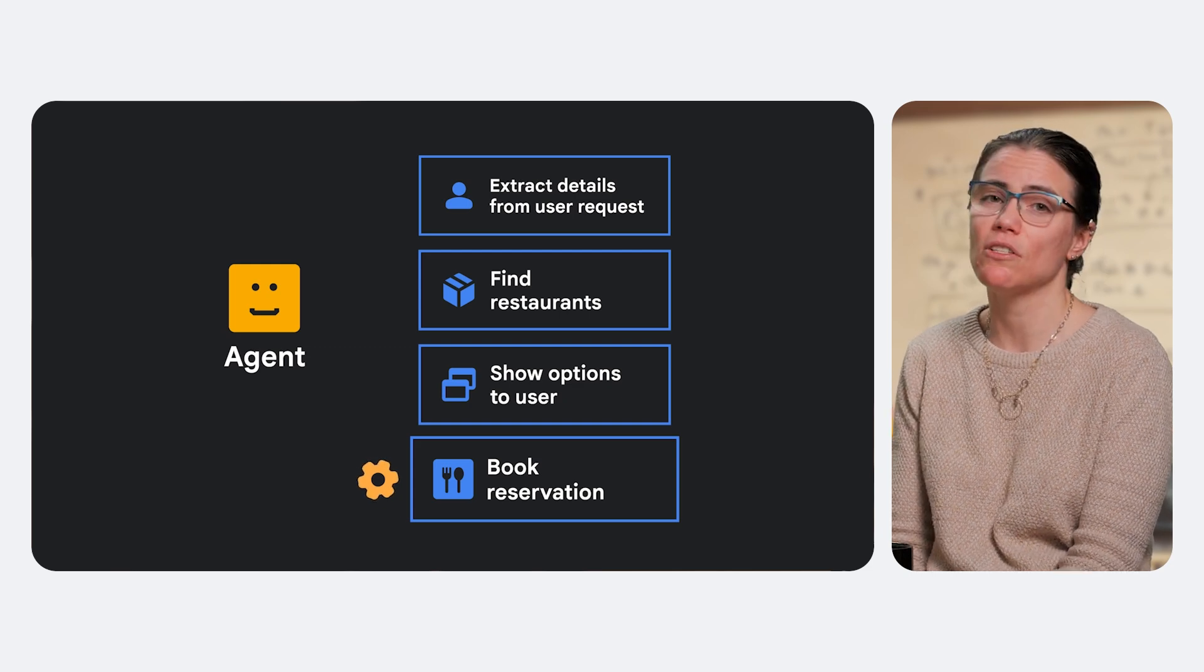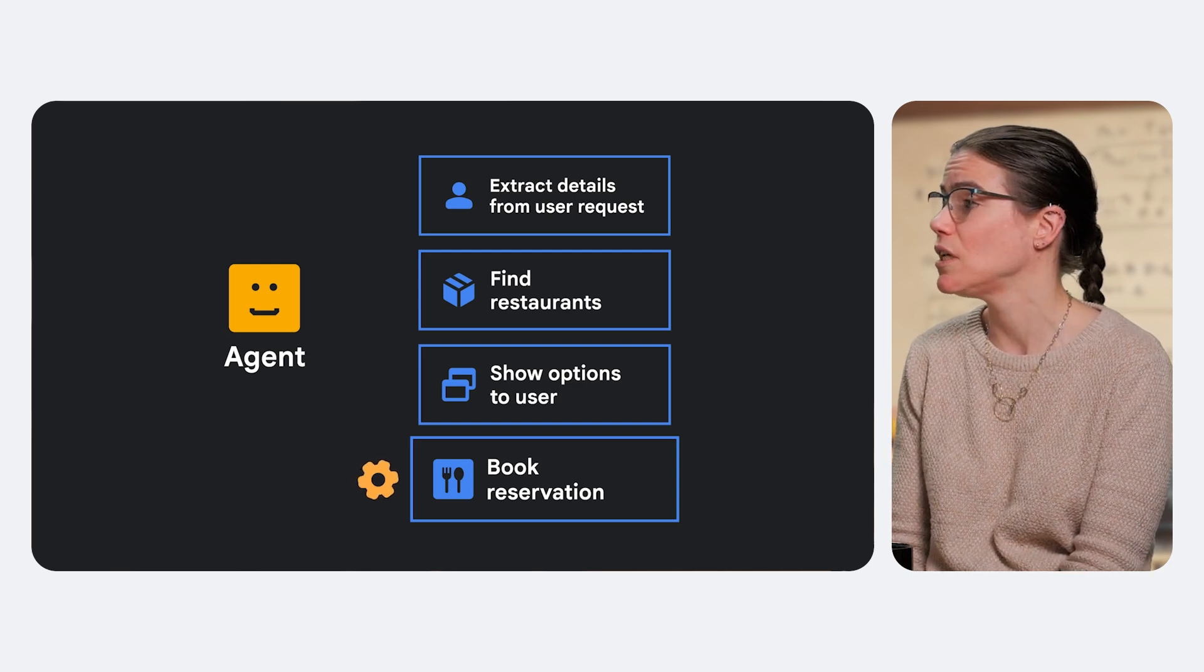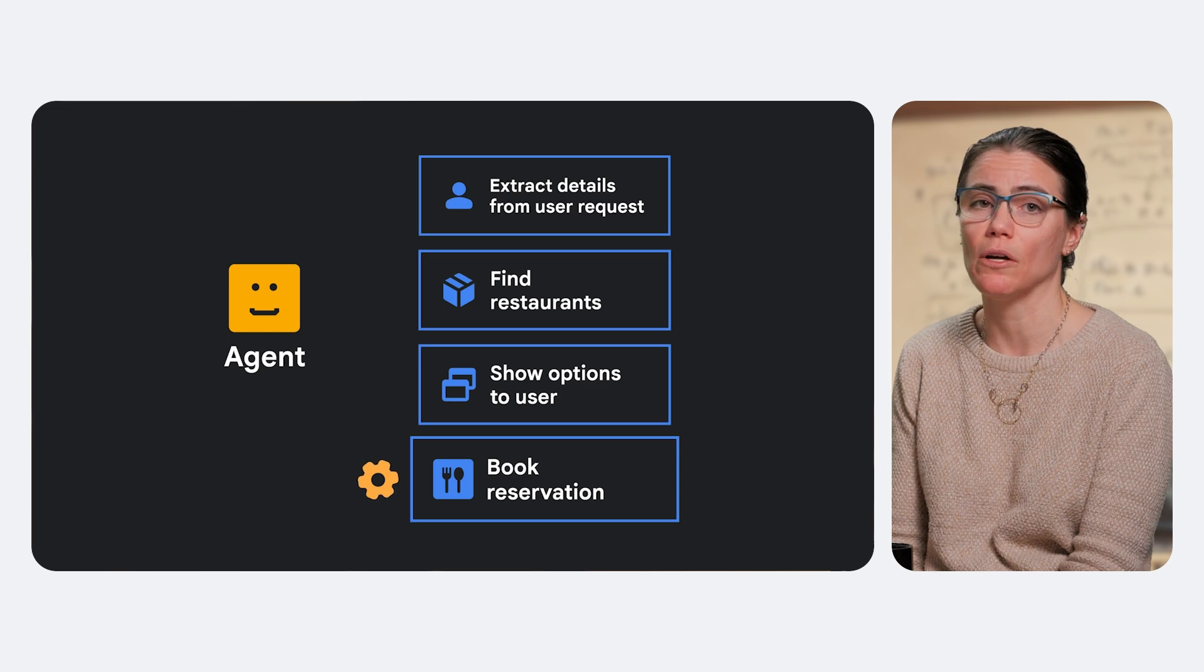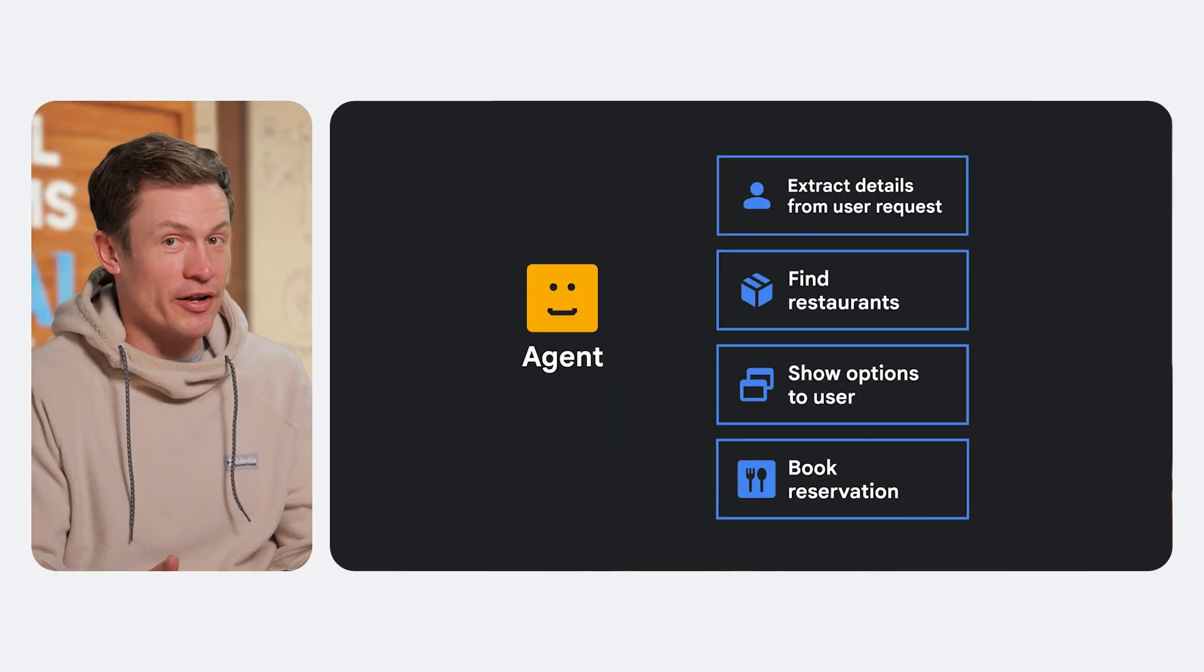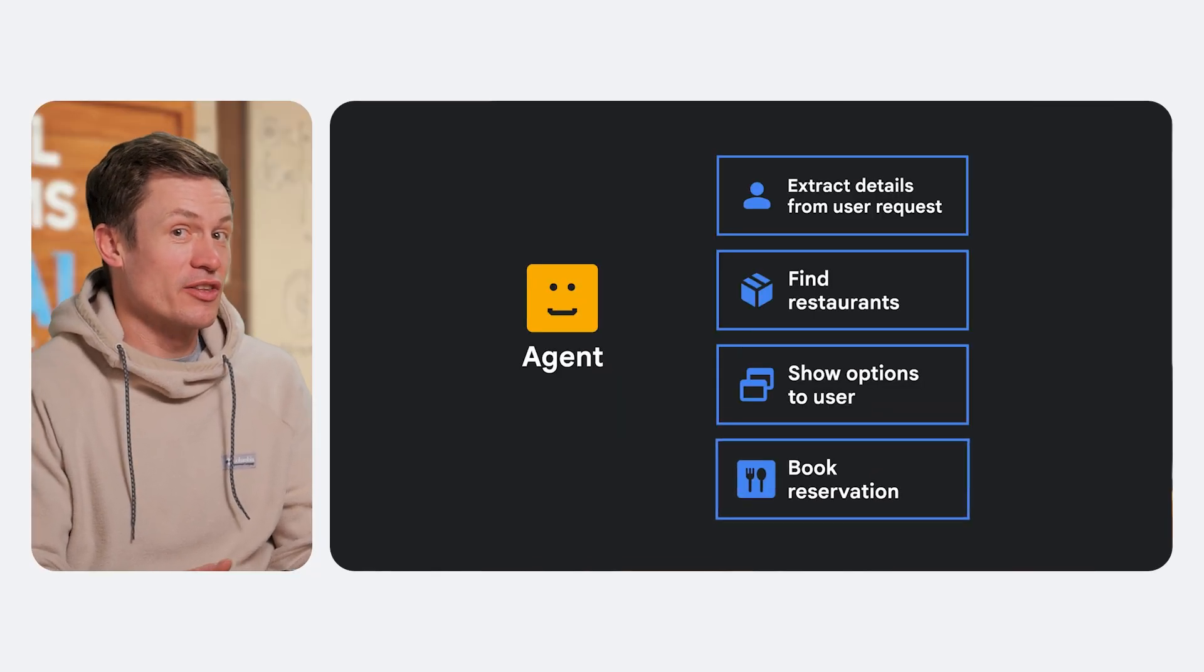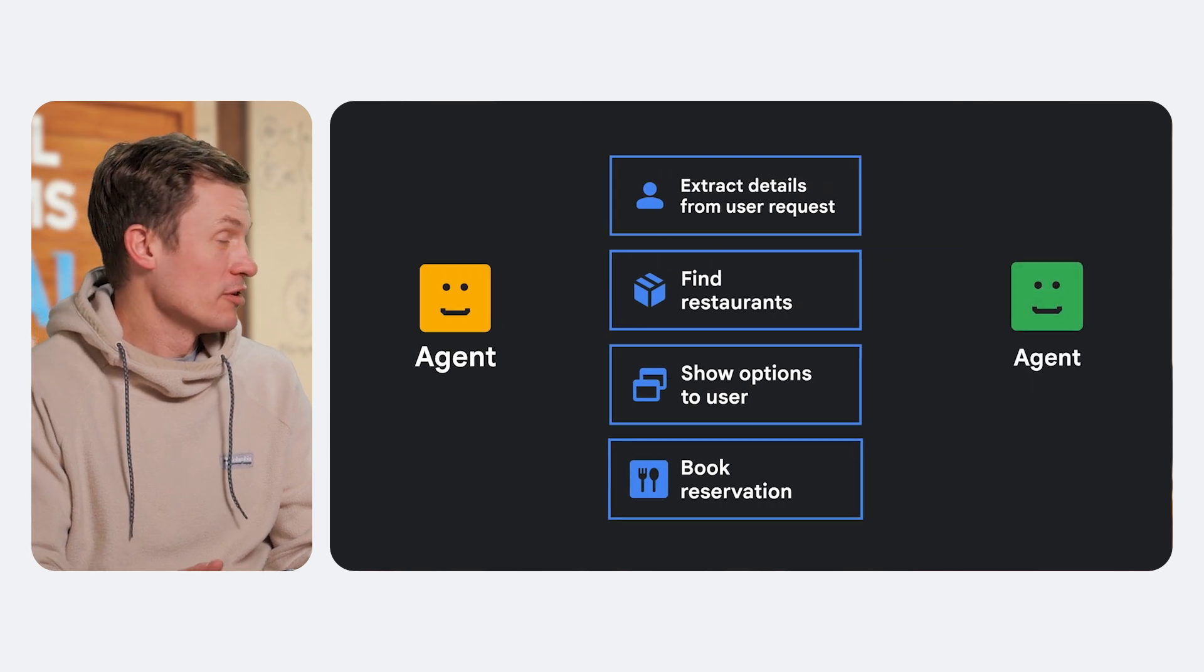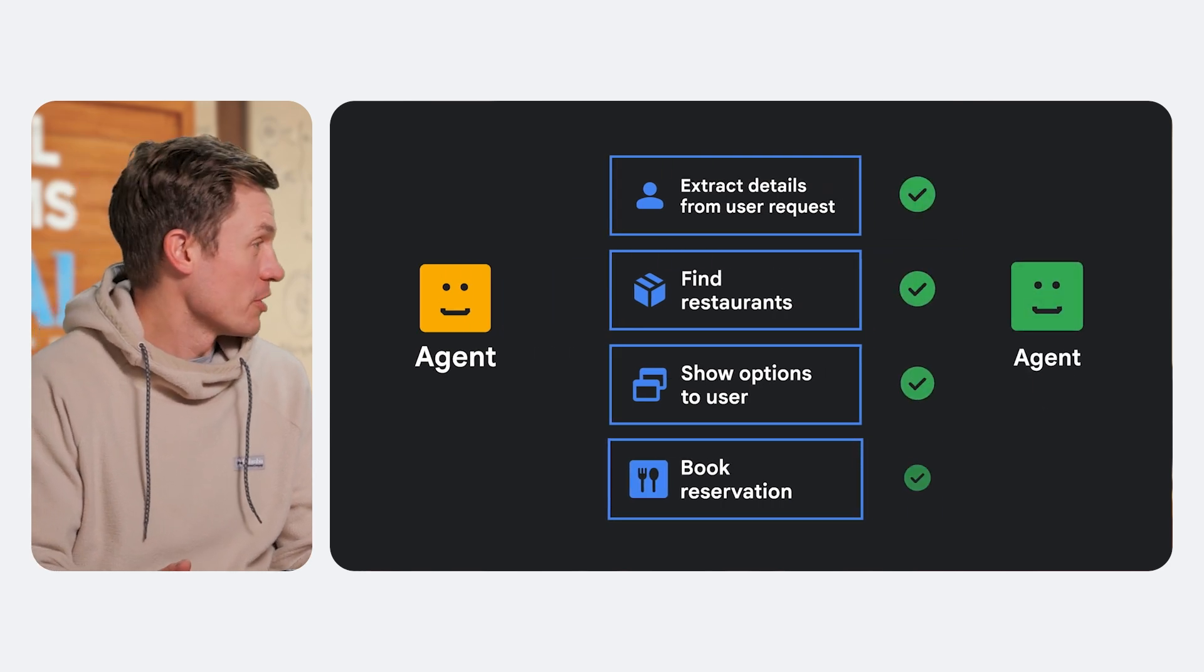You can add evaluation after each of those steps to ensure that things are proceeding correctly as you move along. All right. So, after step one, we can feed the conversation context and the info extracted to an evaluator to make sure that the AI extracted the information correctly.